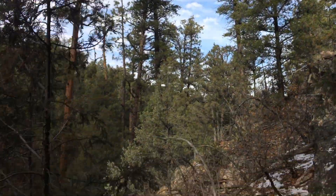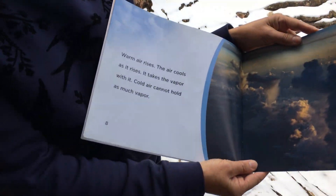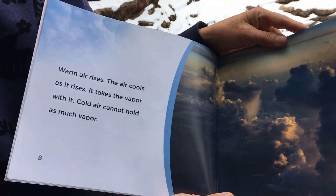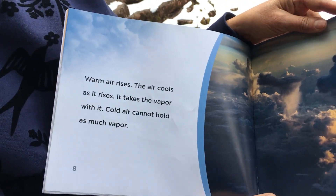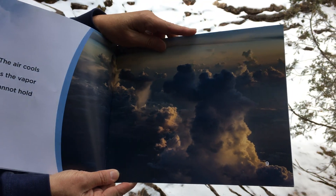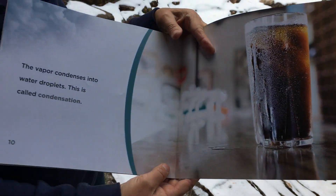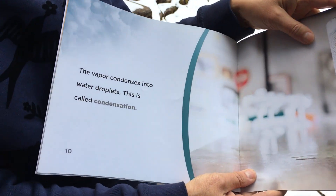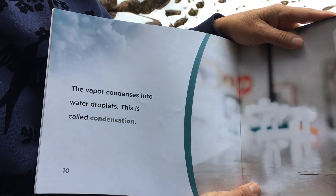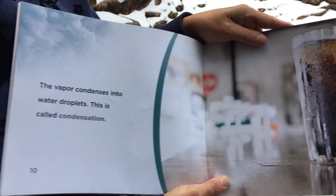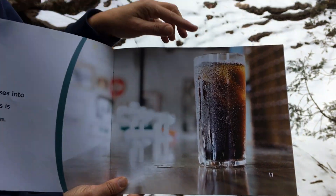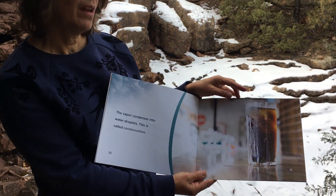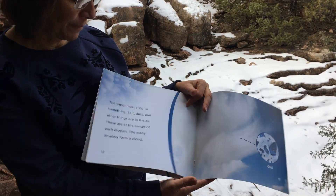Warm air rises. The air cools as it rises. It takes the vapor with it. Cold air cannot hold as much vapor. The vapor condenses into water droplets. This is called condensation, and you can see that happen at home. I'll tell you more about it in the lesson.